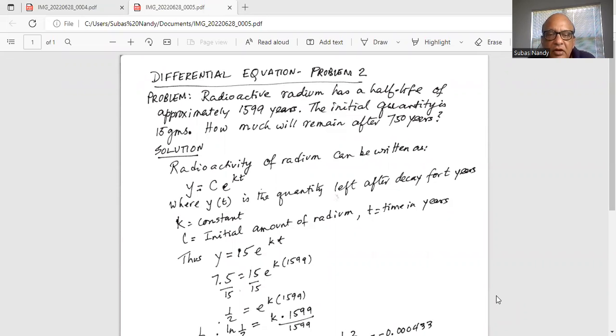Radioactivity of radium can be written as y = c × e^(kt), where y(t) is the quantity of radium left after decay for t years, k is a constant, c is the initial amount of radium, t is time in years. Thus y = 15e^(kt).